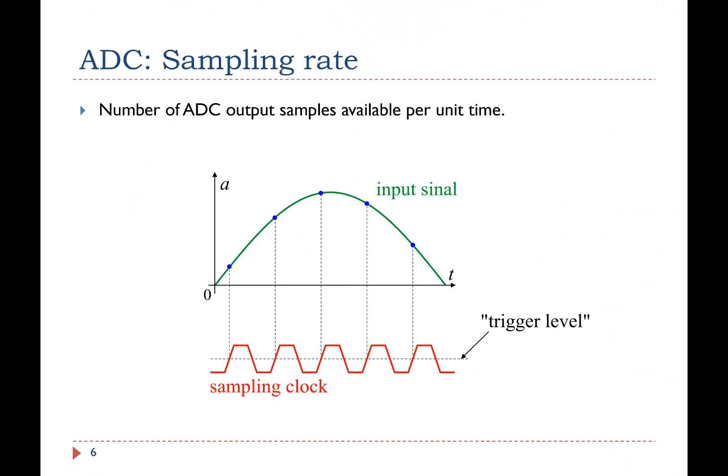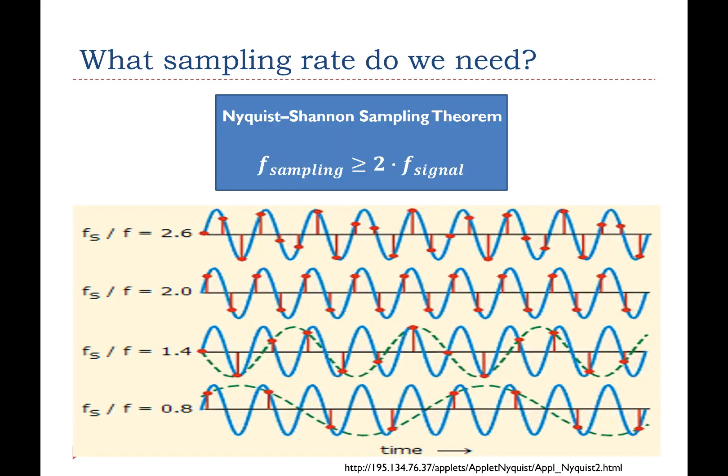We have reviewed the ADC resolution and quantization error. Now, let's talk about sampling rate. The ADC sampling rate is defined as the number of output samples available per unit time. In many digital signal processing applications, the sampling rate is usually fixed, and sampling is triggered periodically after a fixed time interval. What sampling rate do we need?